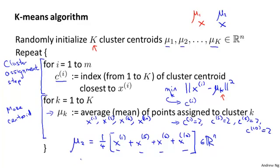One thing I've sometimes been asked: what if there's a cluster centroid with no points — zero points — assigned to it? In that case, the more common thing to do is to just eliminate that cluster centroid, and you end up with k minus 1 clusters instead of k clusters. But if you really need k clusters, you can randomly re-initialize that cluster centroid. It is more common to just eliminate a cluster if it ends up with no points assigned to it, and in practice this doesn't happen that often.